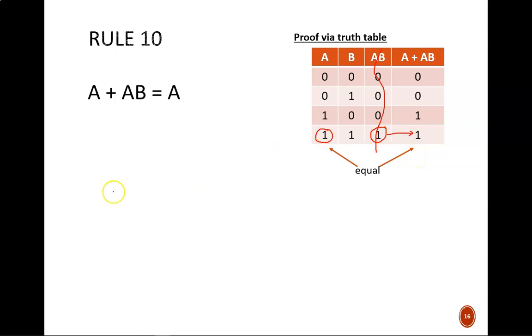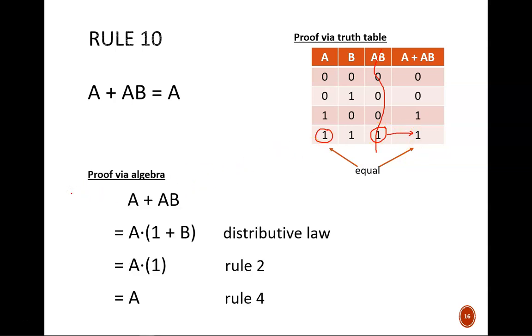We can also prove this rule by applying other Boolean algebra laws and rules. Starting with A OR AB, we can factor out A. Then, rule 2 tells us that 1 OR B equals 1. Finally, rule 4 tells us that A and 1 equals A. Therefore, A OR AB equals A.